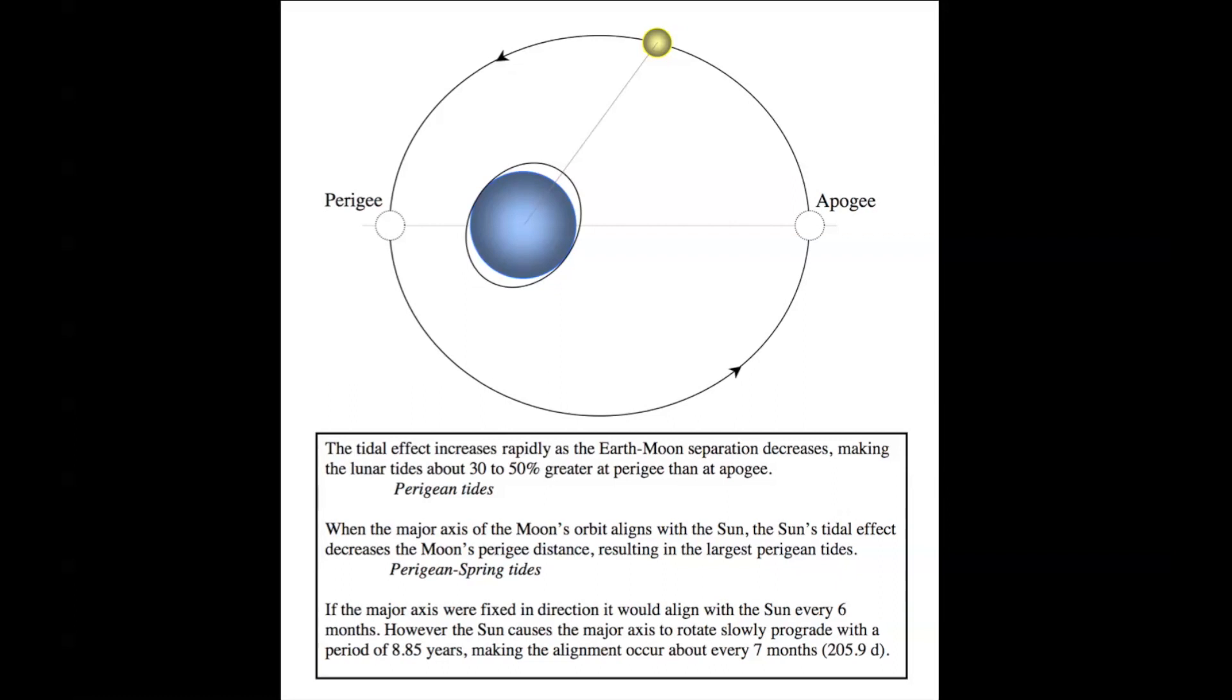When the major axis of the moon's orbit aligns with the sun, the sun's tidal effect decreases the moon's perigee distance, resulting in the largest perigee spring tides. And that's why the range here, 30% to 50%. When the things line up, the perigee distance gets even less, and the tidal effect is bigger, and that gives what are called perigee spring tides.